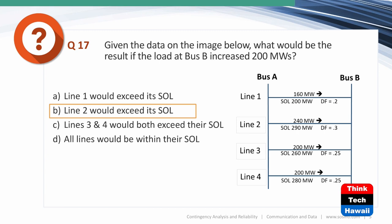For line 2 with a distribution factor of 0.2: 200 × 0.2 = 40 MW, added to 160 = 200 MW — right at the SOL but not exceeding it. Lines 3 and 4 both have a factor of 0.25: 0.25 × 200 = 50 MW added to 260 and 280, giving 310 and 330 — well within limits. Line 1 with factor 0.3 gives 300 MW against a 290 SOL, so answer B is correct: line 1 exceeds the SOL.